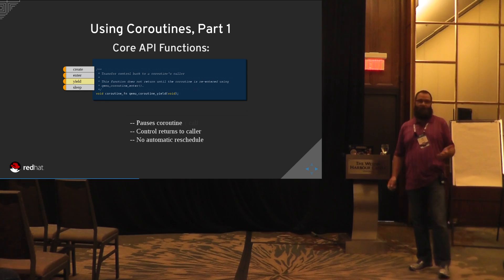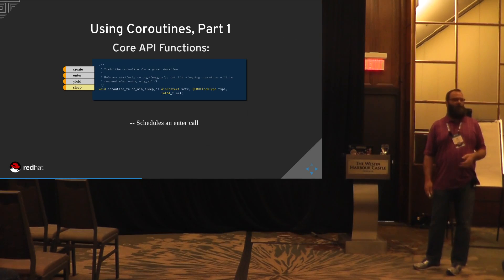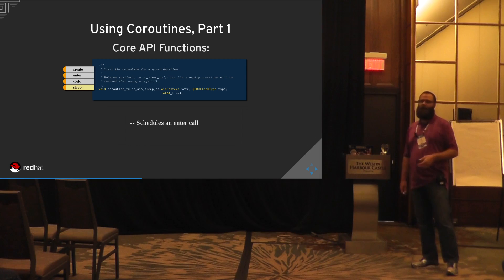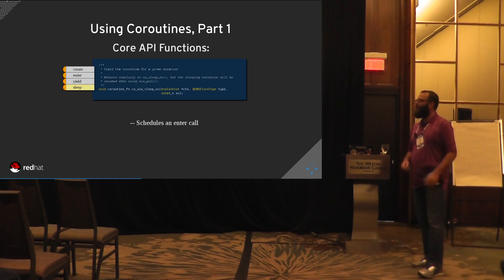Coroutine sleep is useful here — it does a yield and then schedules a timer in the AIO context bottom half to wake up that coroutine by calling qemu_coroutine_enter again. This is used in block job loops, such as commit or mirror, where we iterate copying data and sleep for a certain duration in each iteration to allow other coroutines to execute.